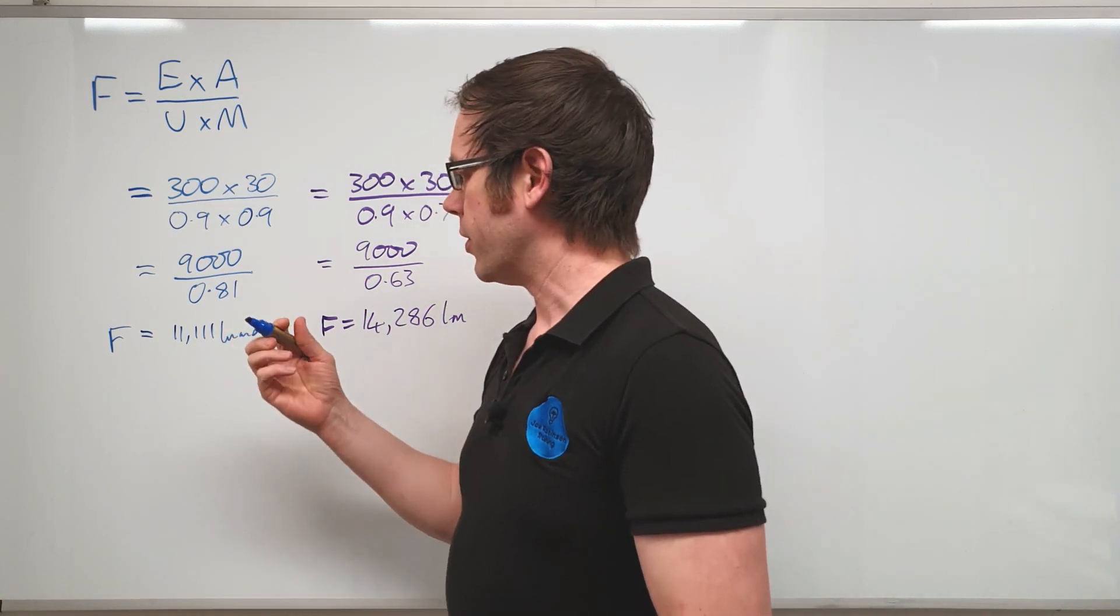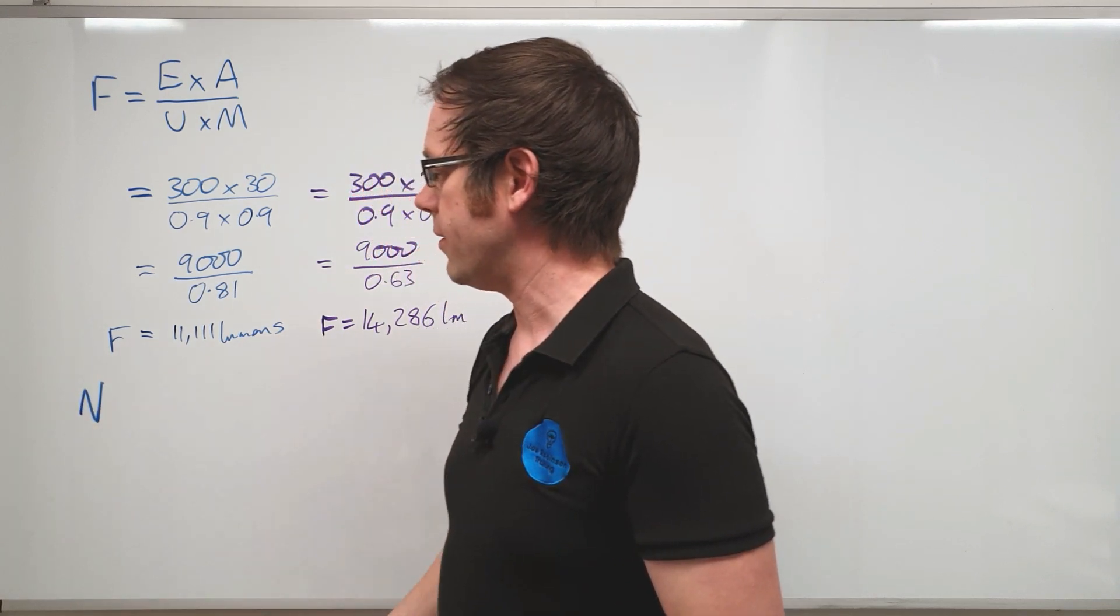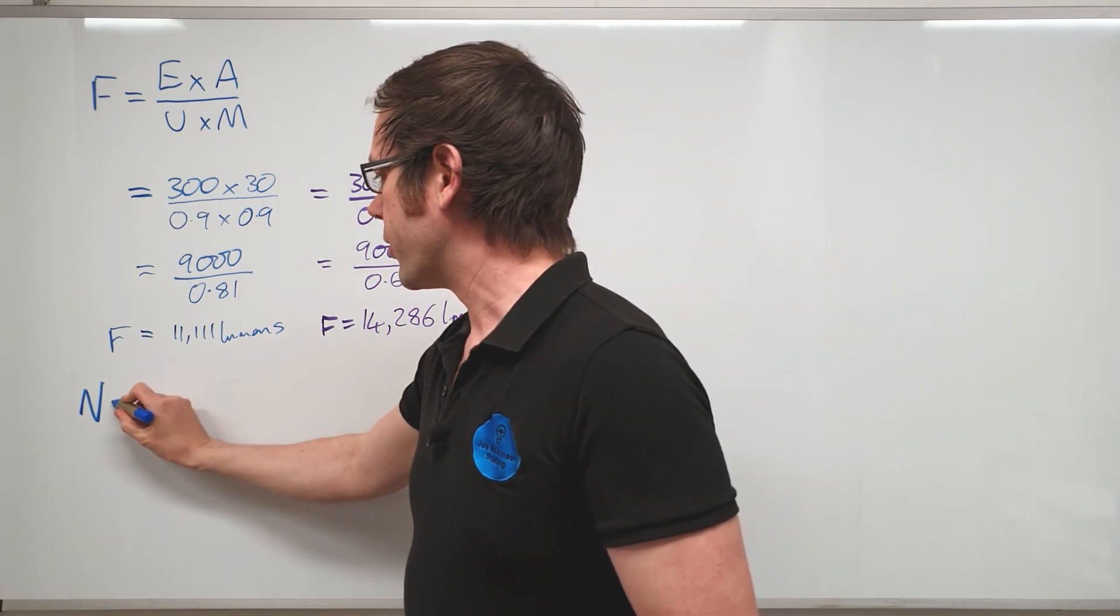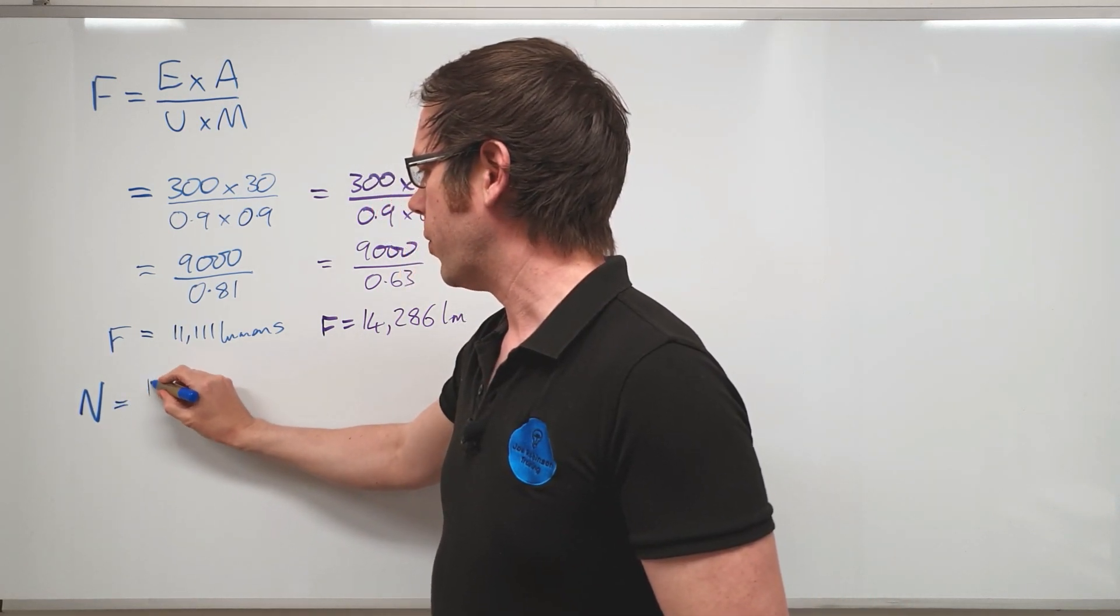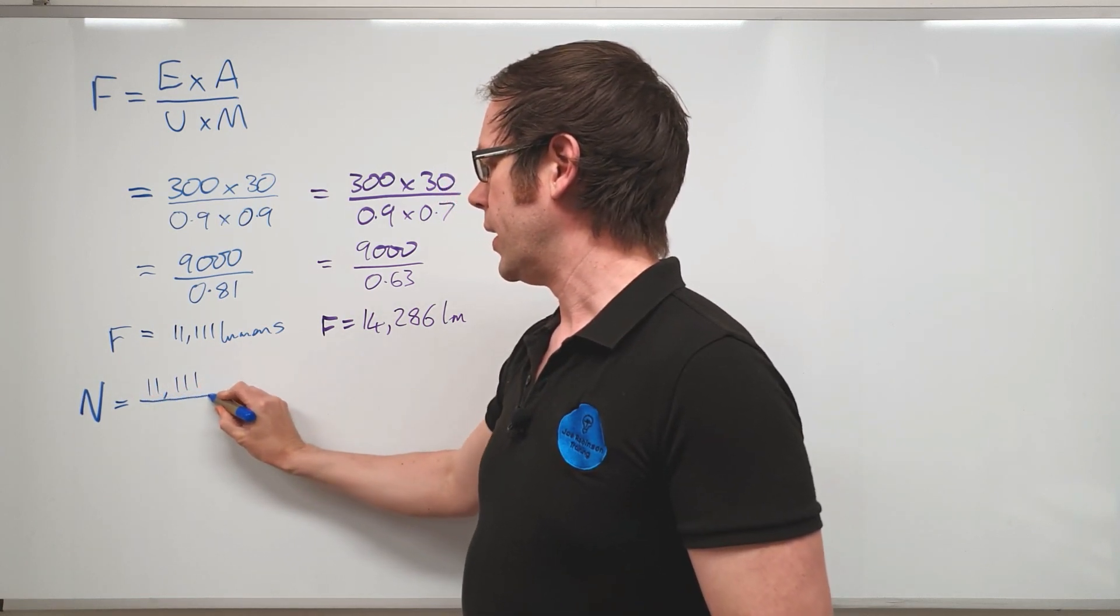All we've got to do in order to figure out the number of light fittings that we require now is to take the number of lumens required to bring the light level up to the correct value and divide it by the lumen output of the light fitting.